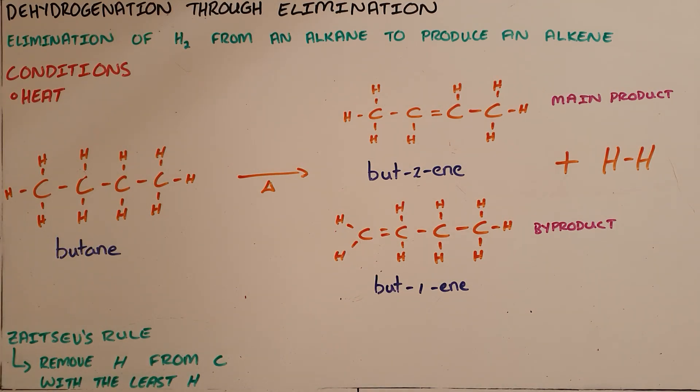Dehydrogenation through elimination is the removal of a hydrogen molecule from an alkane to produce an alkene. Theoretically, it's also possible to remove hydrogen from an alkene to produce an alkyne, but for this syllabus we only cover alkanes to alkenes.